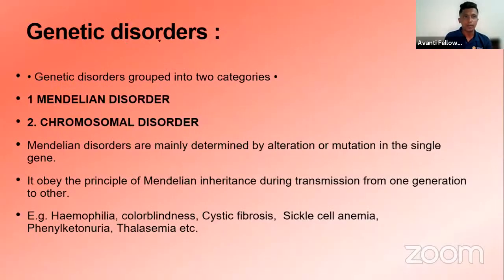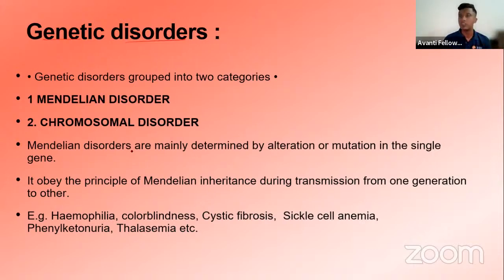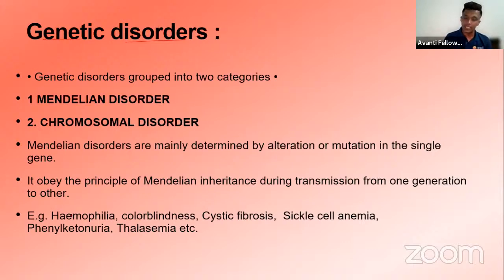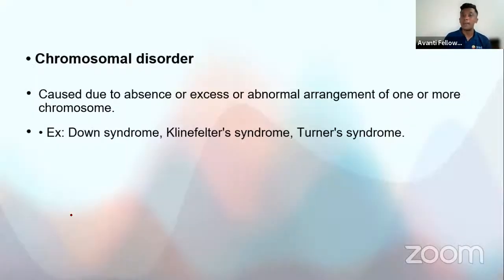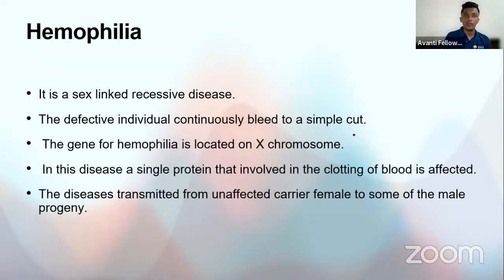Genetic disorders are grouped into two categories: Mendelian disorders, which follow Mendel's laws of dominance, segregation, and independent assortment — examples include hemophilia, color blindness, cystic fibrosis, sickle cell anemia, phenylketonuria, and thalassemia. Chromosomal disorders do not follow Mendelian laws and result from changes in chromosome number or shape (chromosomal aberration) — examples include Down syndrome, Klinefelter syndrome, and Turner syndrome.